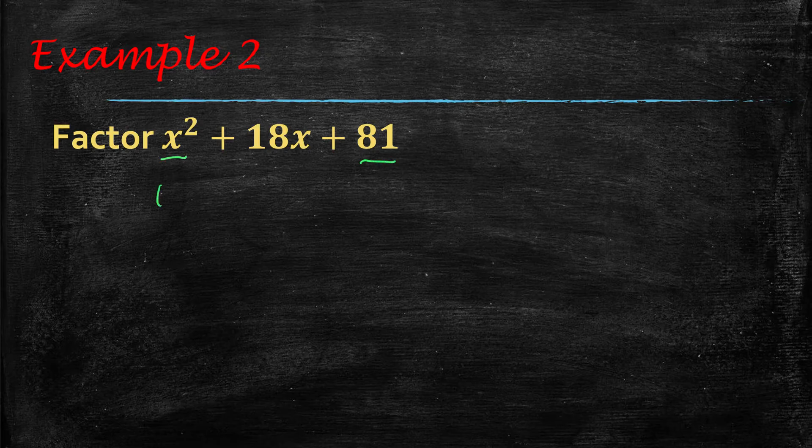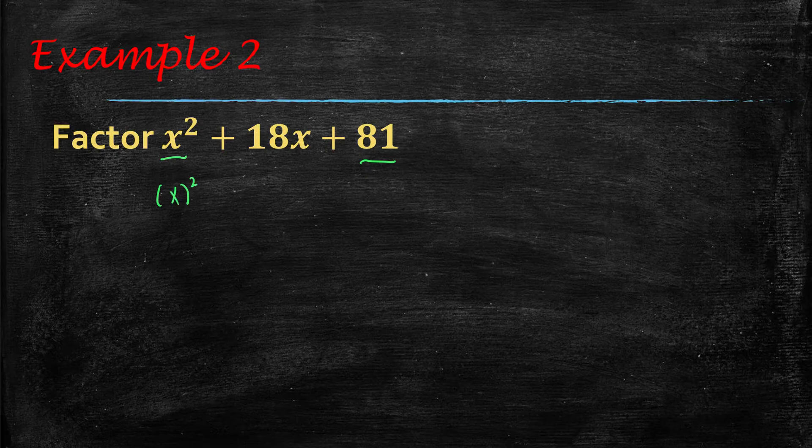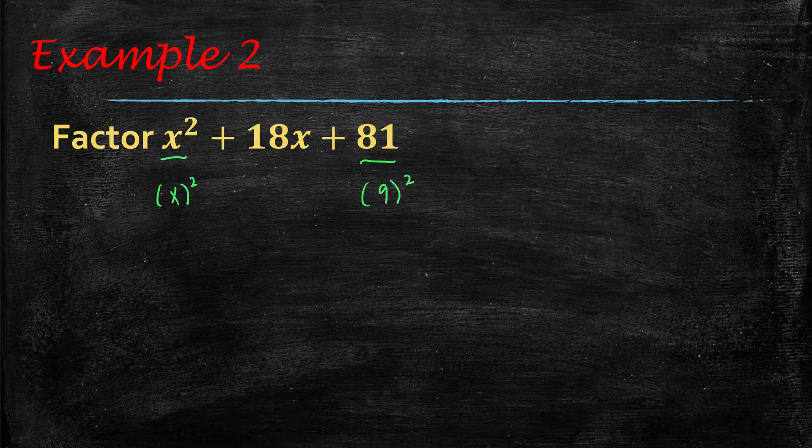So this can be written as x quantity squared. This can be written as 9 squared. Now, to double check that it is a perfect square trinomial, we would have to take our a times our b,